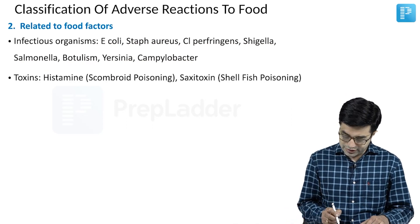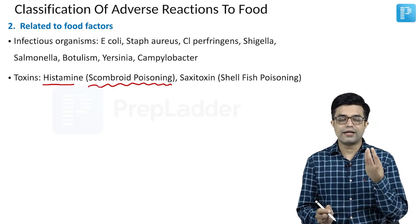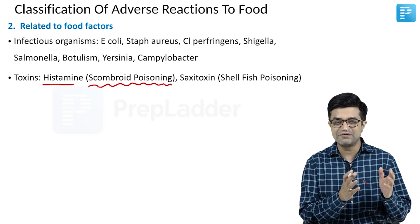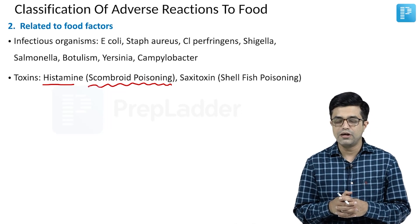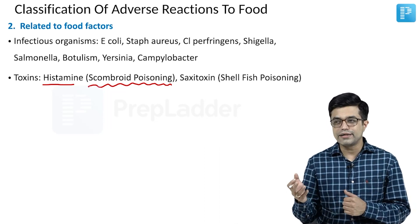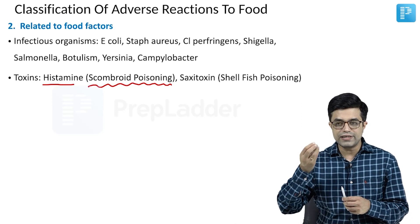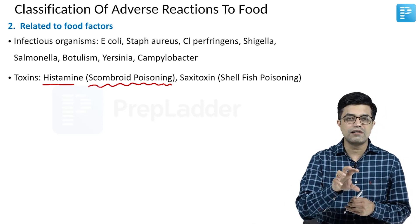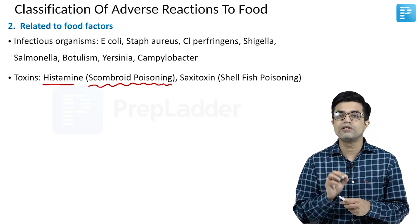The second food-factor category includes toxins. Histamine is typically produced in scombroid fish poisoning. Scombroid fish include tuna and mackerel. If these fish are spoiled, histamine is released, and when people consume that spoiled, unpreserved fish they develop scombroid food poisoning, which leads to histamine-mediated food intolerance.